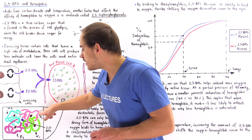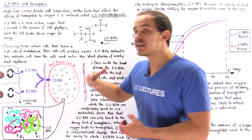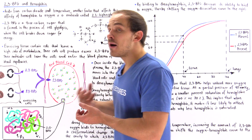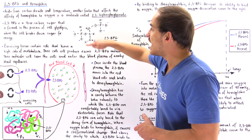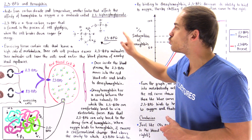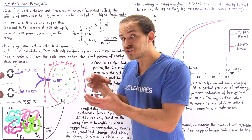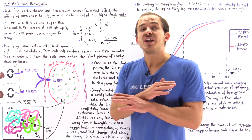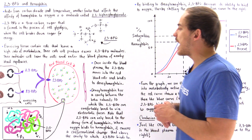Between the beta-2 and beta-1 subunits, we have amino acid residues with side chains that have positive charge. These positively charged sections can bond electrostatically to the negatively charged phosphate groups of 2,3-BPG. This cavity inside the hemoglobin only exists when no oxygen is bound to the heme groups.